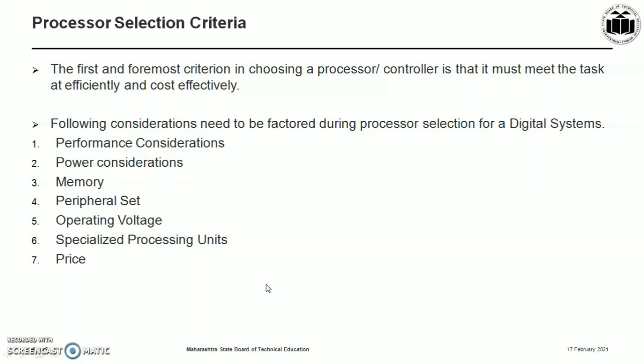The following considerations need to be factored during processor selection for digital systems: performance considerations, power considerations, memory units, peripheral sets, operating voltage, specialized processing units, and price.